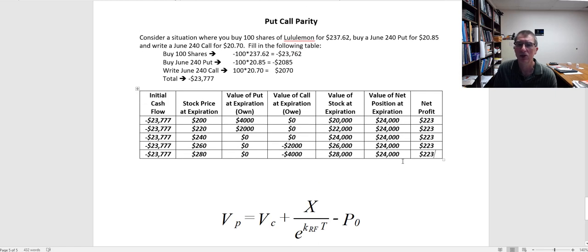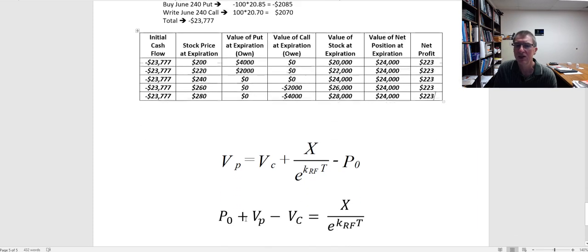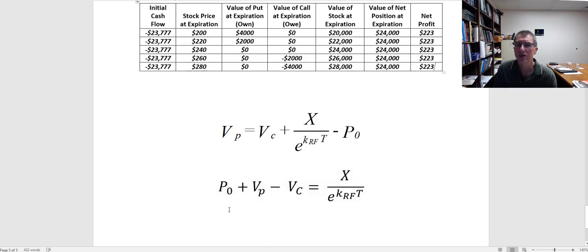Now if you remember back from the Black-Scholes option pricing model, we said the value of the put is equal to the value of the call plus the present value of the exercise price minus the stock price. Now if we do a little math here, we can rewrite this equation. Let's add P0 to both sides, subtract the value of the call from both sides.